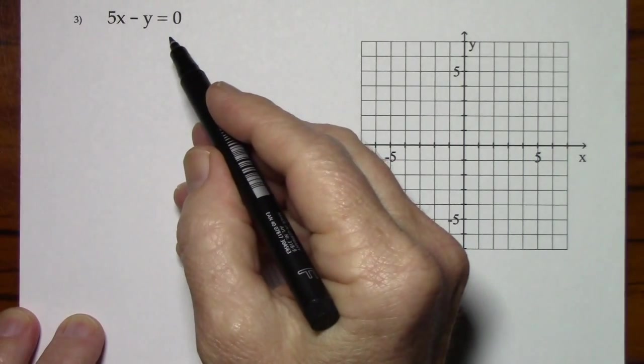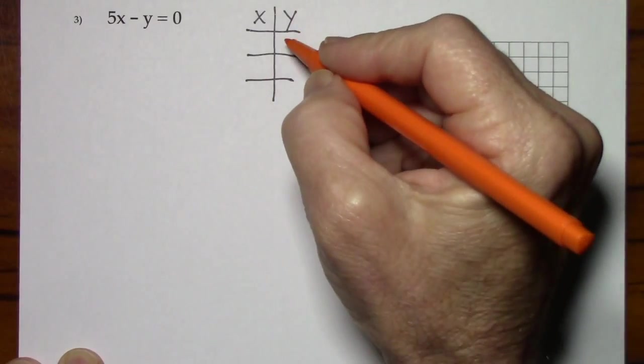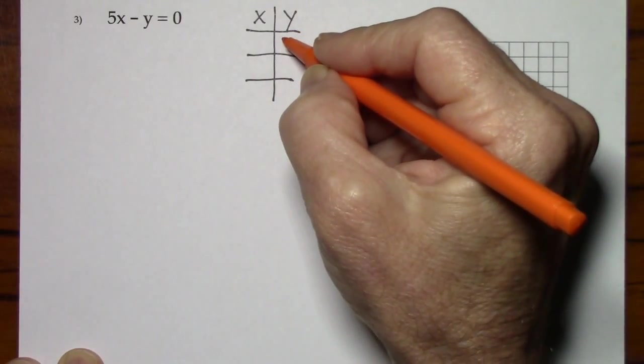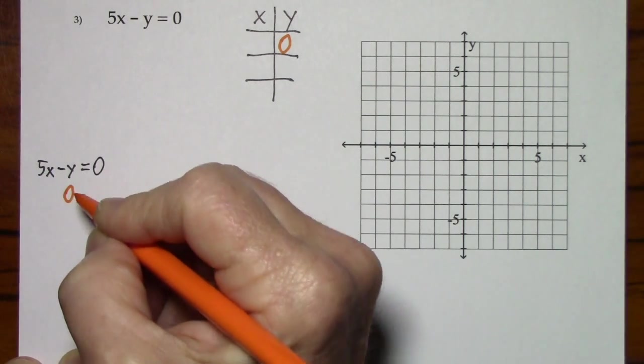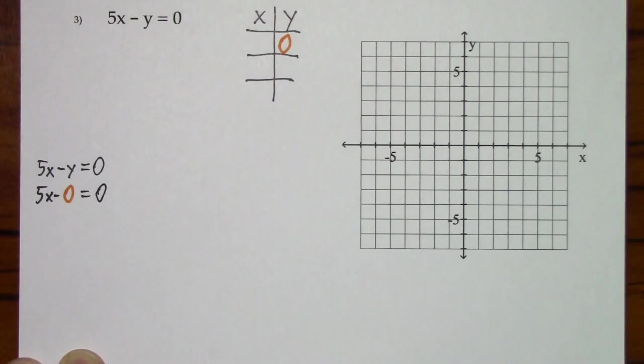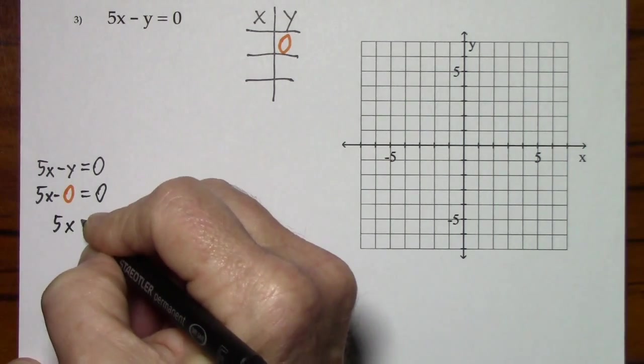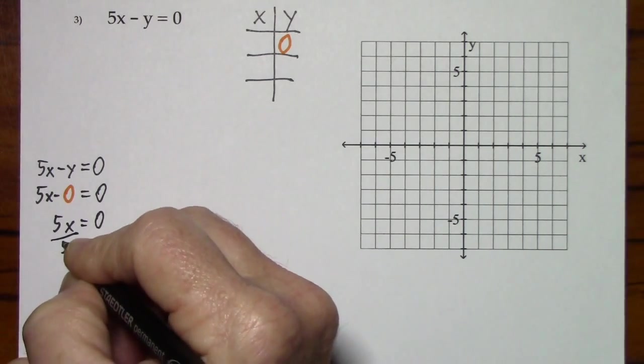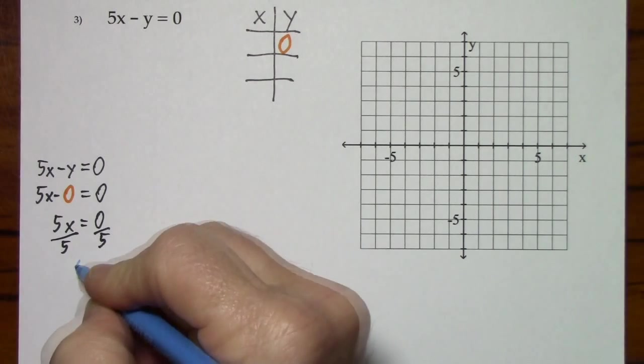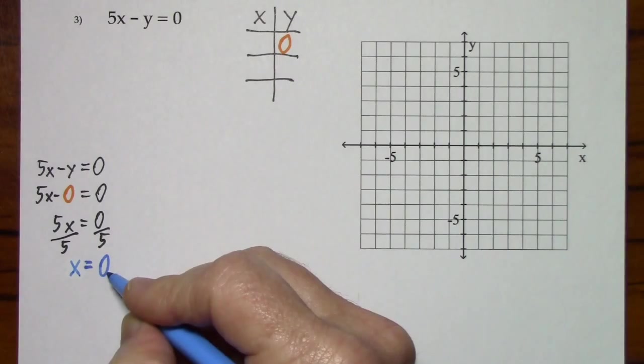Again, in order to graph this equation, I'll go ahead and use the xy chart. First, I'll see what happens when y is 0. We get x is 0.